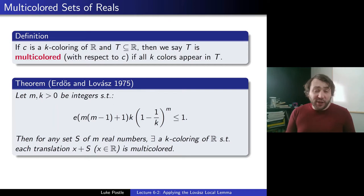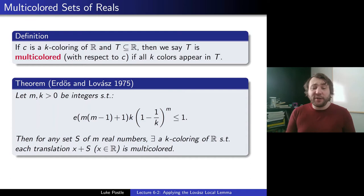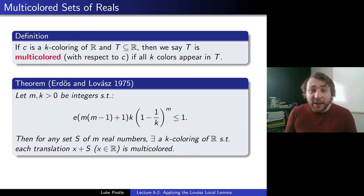If we let m and k be integers such that they satisfy this formula: e·m·(m−1+1)·k·(1−1/k)^m ≤ 1, then for any set S of m real numbers, there exists a k-coloring of the reals such that each translation x + S is multicolored. So given a set of m real numbers and not too many colors relative to m, we can guarantee that all translations are actually multicolored.